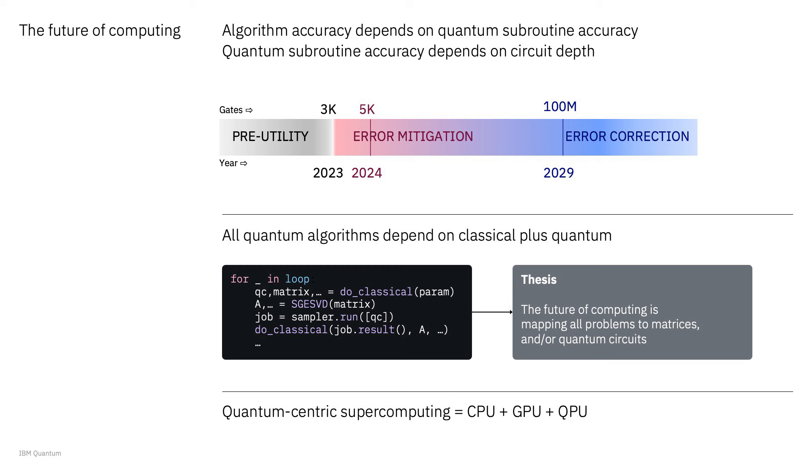I'm hoping we can achieve quantum advantage in the next couple of years — it's not too far away. I think it can be just around the corner if we can really get algorithm discovery happening. I strongly feel that to get to quantum advantage, it will not be done by IBM alone. We also think the future of computing is bigger than quantum alone; it's going to be quantum plus classical, using both to discover these algorithms.